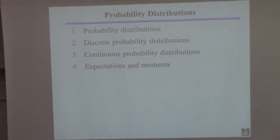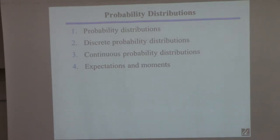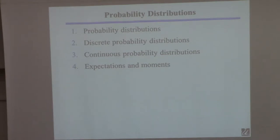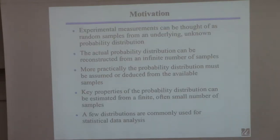So I'm going to introduce the general idea of probability distributions, and then talk about two different kinds. One is discrete — the random variable can assume a finite number of possibilities, like flipping a coin. And then I'll talk about things of more interest to us as chemical engineers, which are continuous probability distributions, of which the normal Gaussian distribution is the primary example. We'll talk about it next time. And then I'll talk about something called expectation and moments — that's important because it's terminology people use, so when you hear it, you need to know what they're talking about.